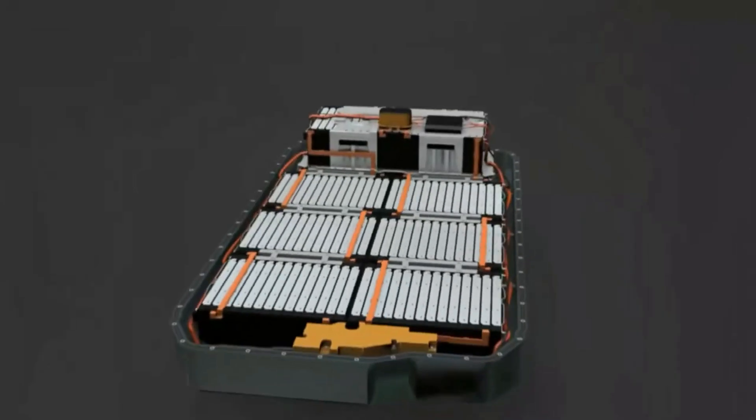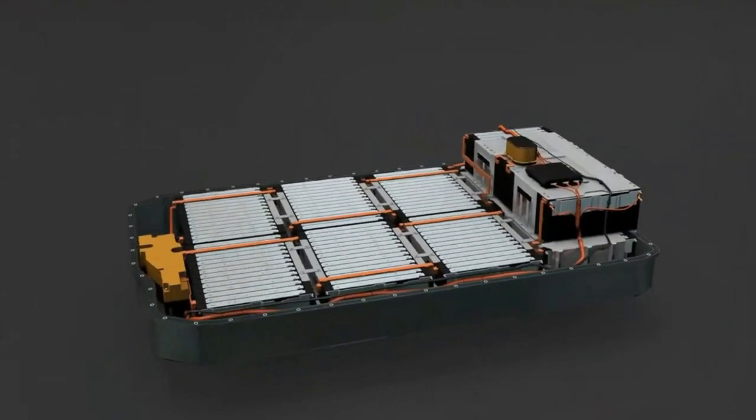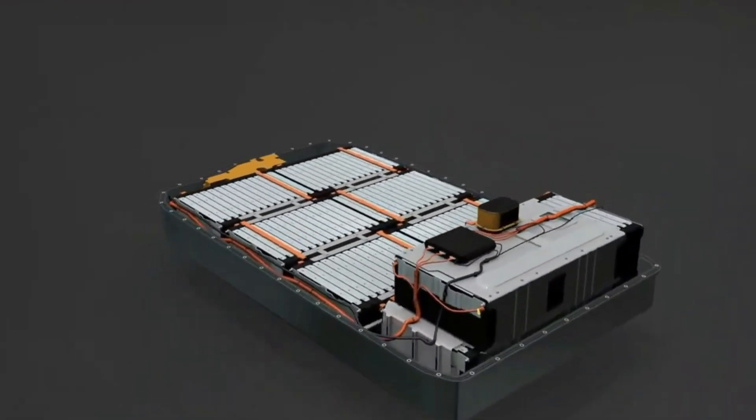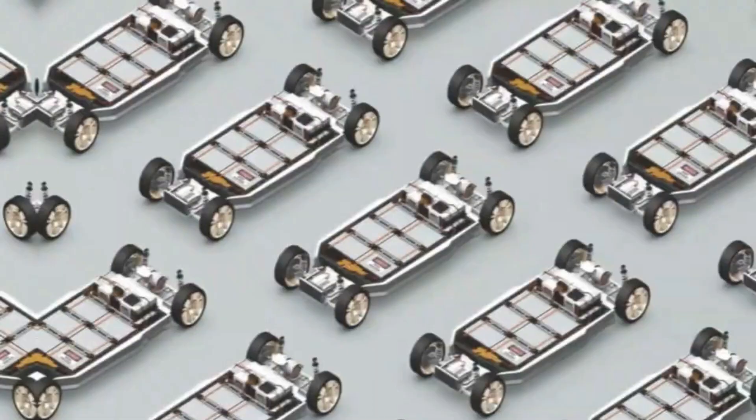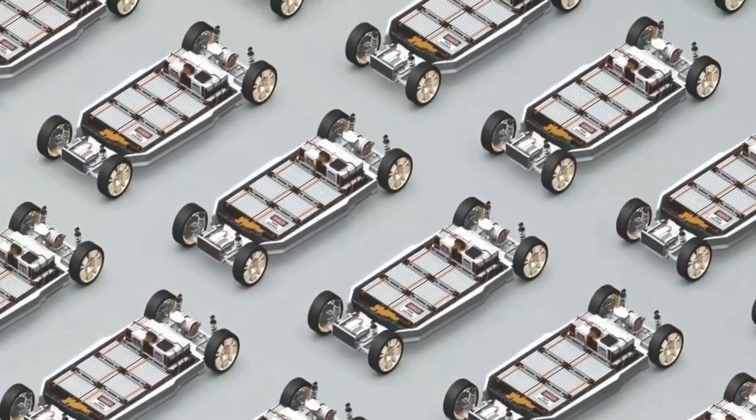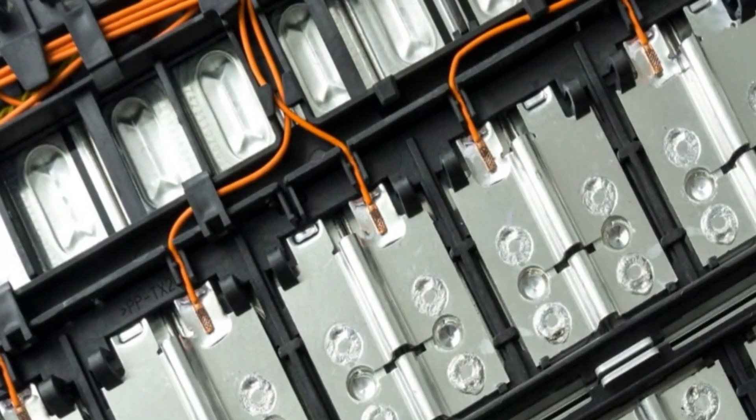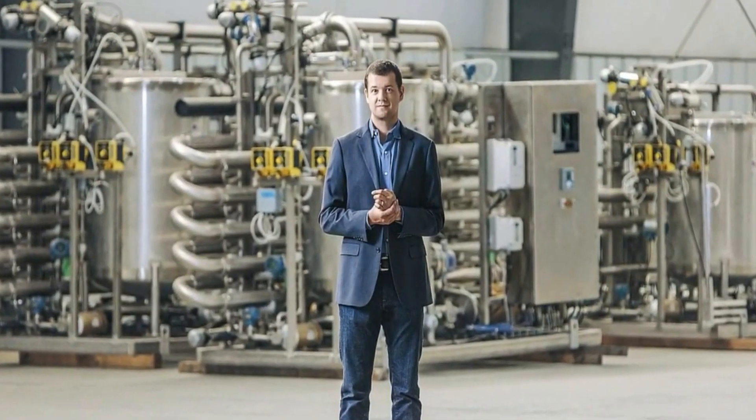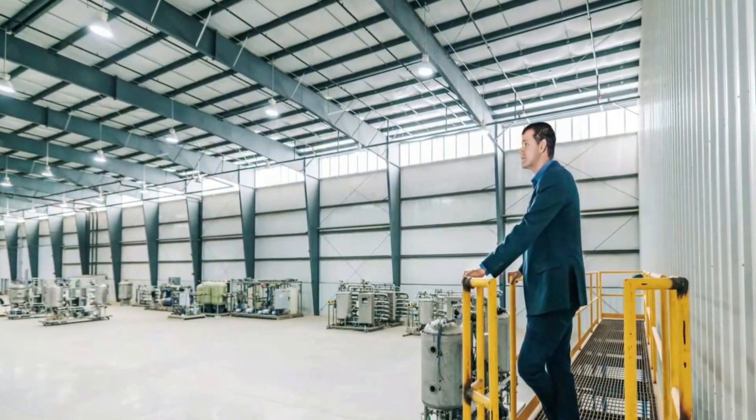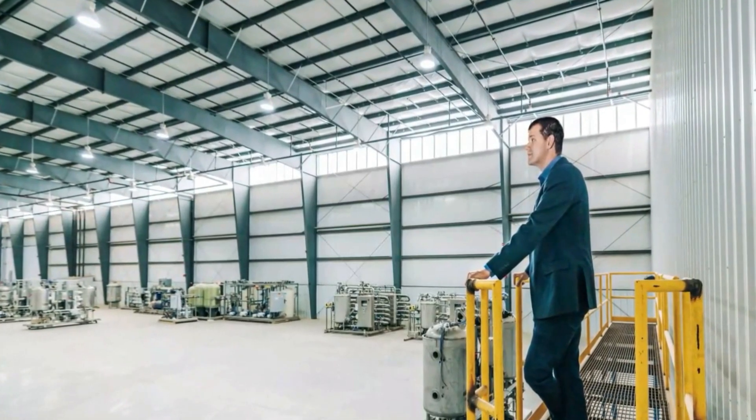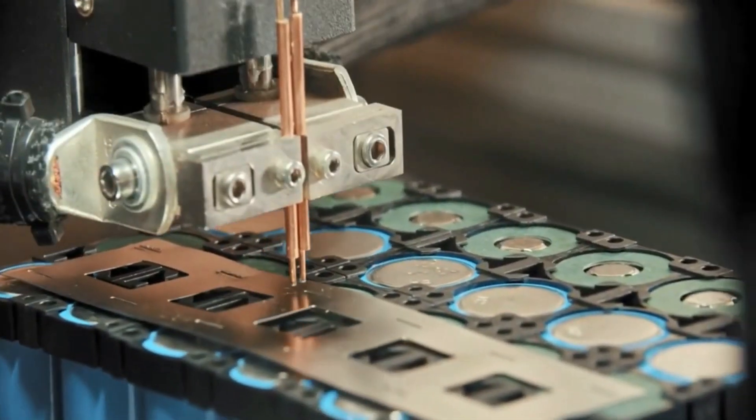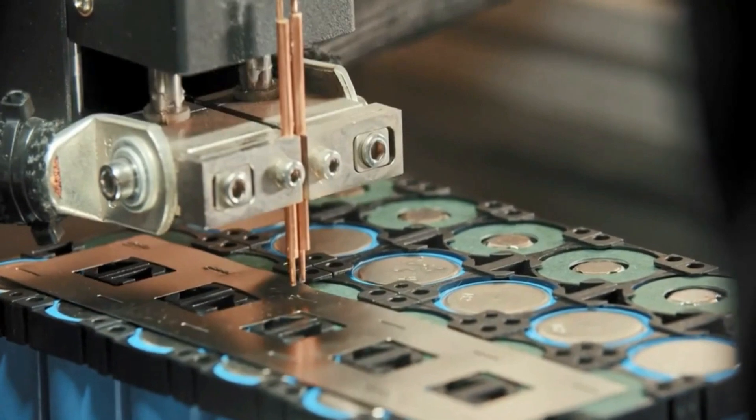But the potential of silicon anode batteries extends beyond consumer electronics. Electric vehicles equipped with this technology could experience a 20% increase in range. For example, the Tesla Model Y could see its range rise from 316 to 379 miles, while the Model 3, Model X, and Model S would also benefit from significant range improvements. This breakthrough paves the way for more practical and efficient electric transportation.